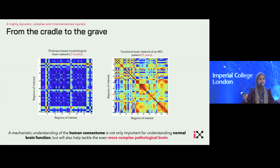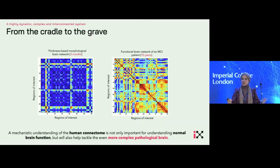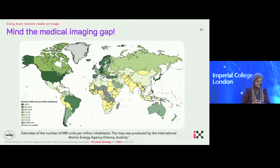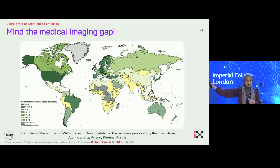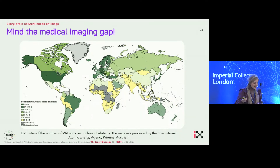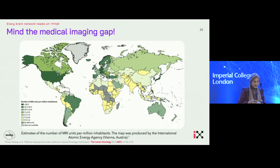And how can we use AI to understand our mirror intelligence, our aging, our neural development from the beginning of our lives? To get those matrices, every brain needs an image — every brain needs a network, needs an image.